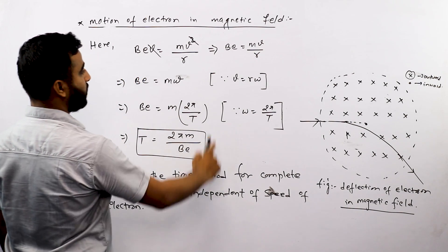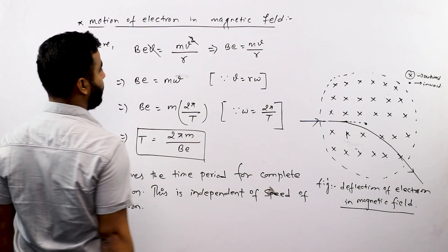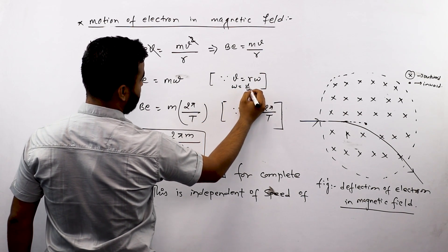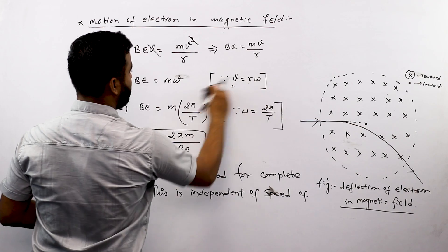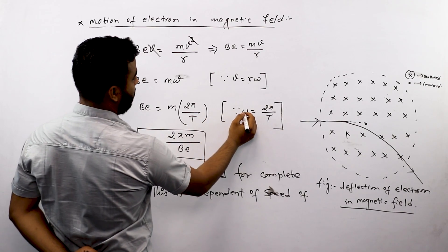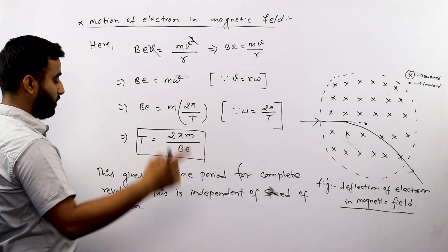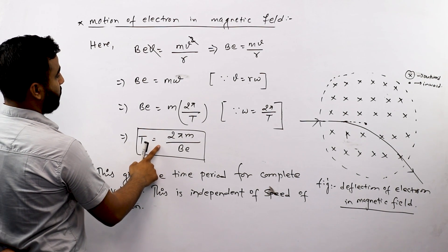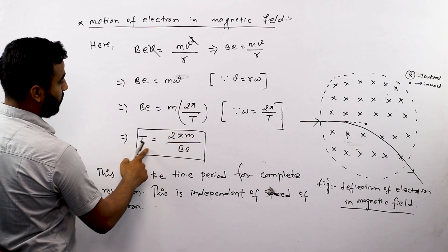The rotation direction gives us angular velocity. Velocity v equals r times omega, the angular velocity. So v/r equals omega, which equals 2π divided by the time period T. Substituting, we get T = 2πm/Be. This is the time period for one complete revolution.